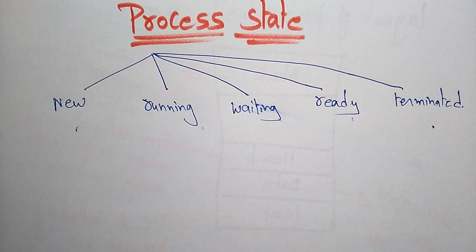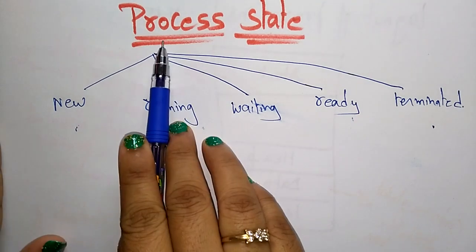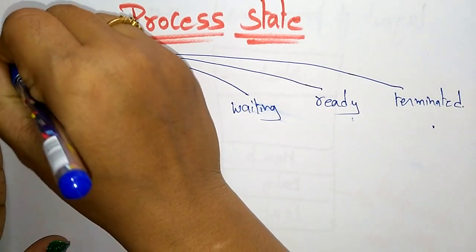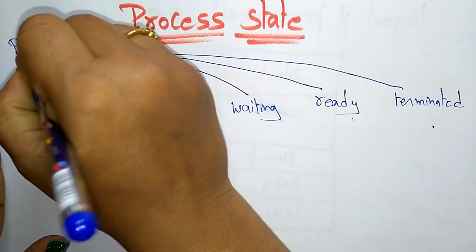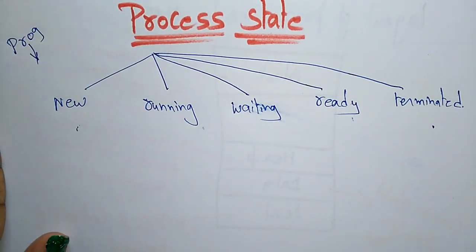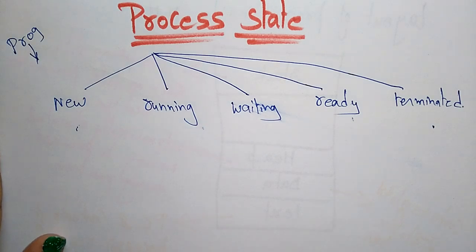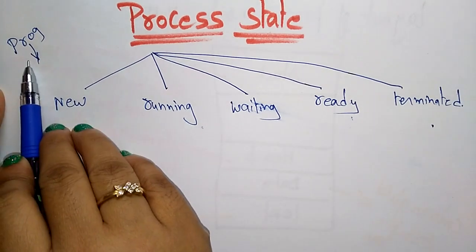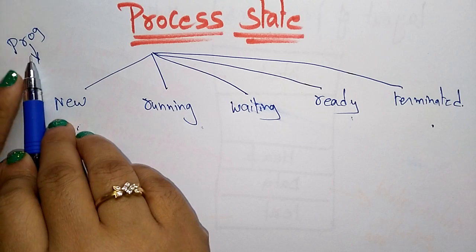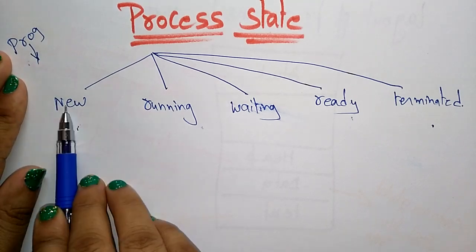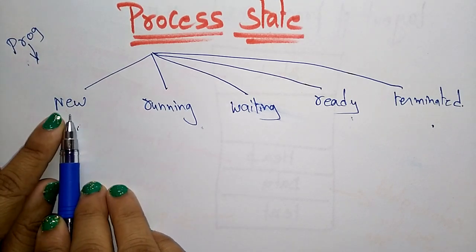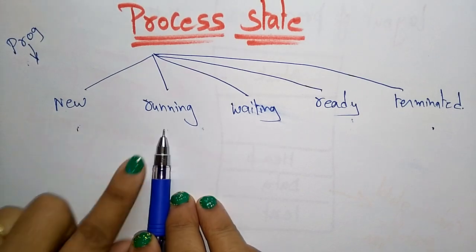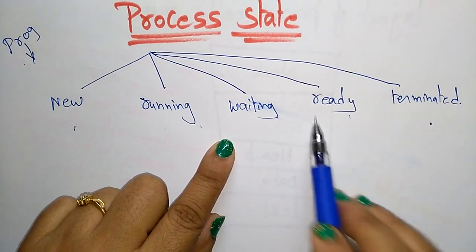So the single process — just like I am a single person — changes its behavior from state to state according to circumstance and priorities. In the same way, a single program's process is going to change its state from new to running, or it should be waiting, or in ready state, or in terminated state.